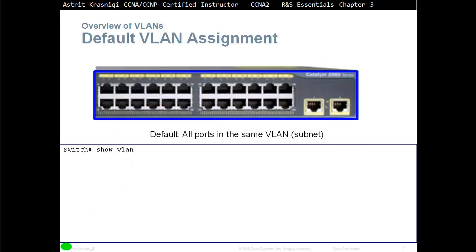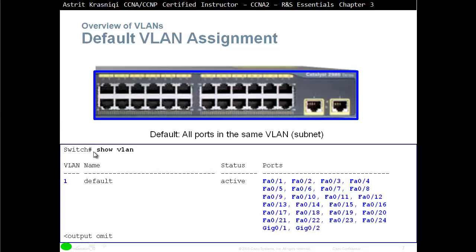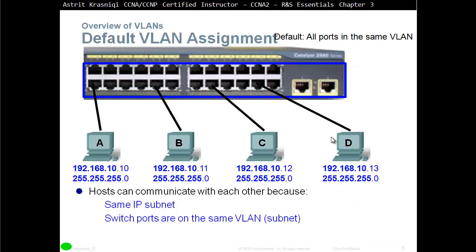By default, all ports are in the same VLAN subnet. If we go to the switch in privileged mode and type 'show vlan', we can see all ports belong to VLAN 1 — that's the default VLAN — and all ports are active. We have 24 Fast Ethernet ports and two Gigabit Ethernet ports. The PCs (A, B, C, D) have IP addresses 192.168.10.10, .11, .12, and .13.